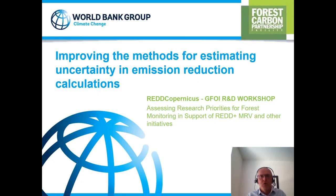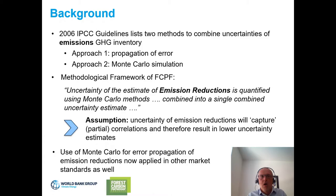My name is Marco van der Linde. I'm a member of the team within the World Bank that manages the Forest Carbon Partnership Facility, or FCPF. The proposal I'd like to make today is on improving the methods for estimating uncertainty in emission reduction calculations. As background, in the 2006 IPCC guidelines, there are two methods to combine the uncertainties of emissions from greenhouse gas inventories: the propagation of errors and Monte Carlo simulation.